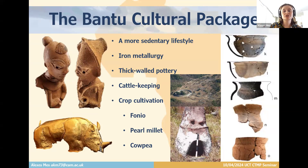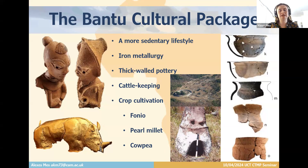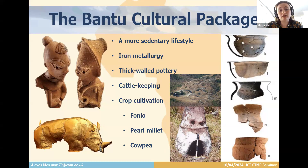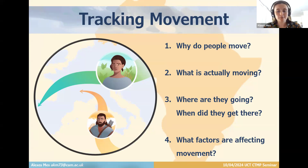Major economic and cultural changes took place over sub-Saharan Africa during this time. The dispersal is associated with a Bantu cultural package consisting of a more sedentary lifestyle, thick-walled pottery, iron metallurgy, and you can see an example here of an anthropomorphic iron smelting furnace from Nyanga in eastern Zimbabwe, with indications of fertility symbols typical of Bantu-speaking people. Also in the package is cattle keeping and crop cultivation; there is linguistic evidence indicating that millet, pearl, and cowpea were introduced by Bantu-speaking people. I'm going to consider movement in the framework of four questions: why do people move, what is actually moving, where are they going and when did they get there, and what factors are affecting the movement?